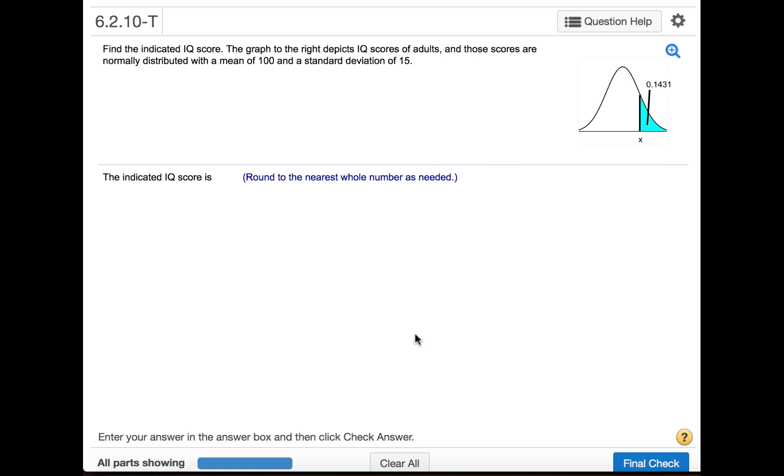Find the indicated IQ score. The graph to the right depicts IQ scores of adults, and those scores are normally distributed with a mean of 100 and a standard deviation of 15. We are to find the IQ score that is situated so that 14.31% of the distribution is greater than that IQ score and 85.69% is less.